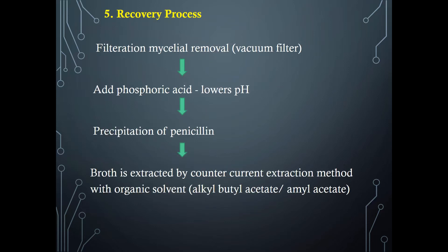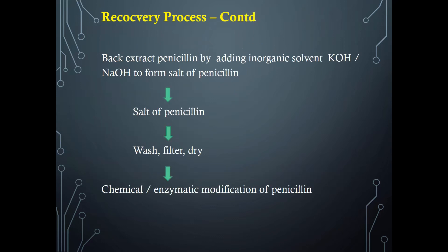The fifth step is the recovery process. Vacuum filters are used to remove the mycelia, then phosphoric acid is added to lower the pH, converting penicillin into anionic form and causing precipitation. The broth is immediately extracted by counter-current extraction using organic solvents such as alkyl butyl acetate or amyl acetate. Penicillin is then back-extracted by adding inorganic solvents like potassium hydroxide or sodium hydroxide to form a salt of penicillin. This salt is washed, filtered, dried, and then chemically or enzymatically modified to obtain the desired penicillin product.